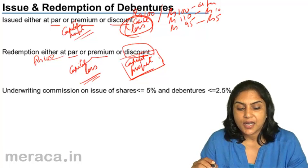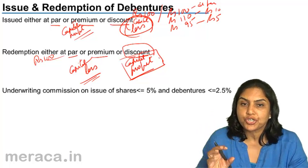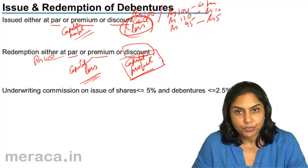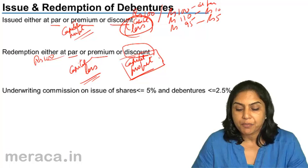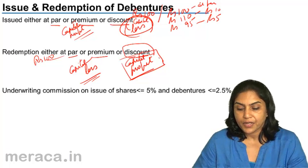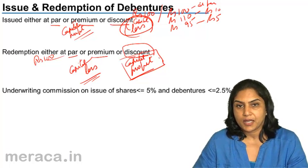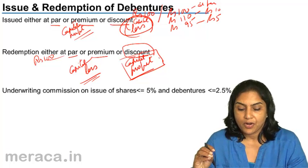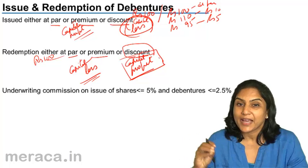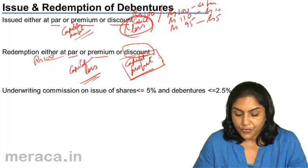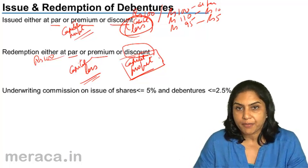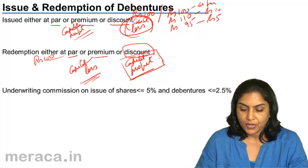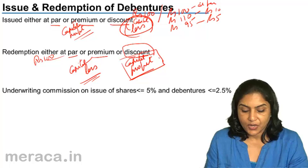Since at the time of issue itself, the terms contain how the debentures are going to be redeemed — whether at par, premium or discount — we often make provision for the loss which we expect in future. We consider the terms of redemption at the time of issue itself. We will discuss this in a while.